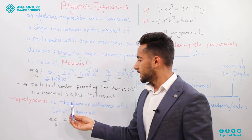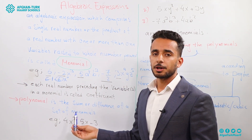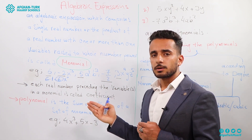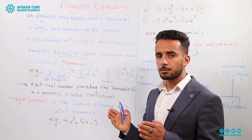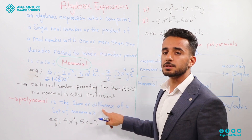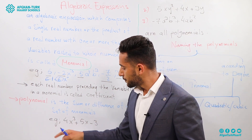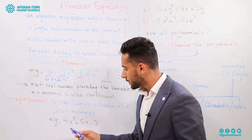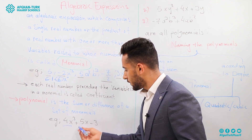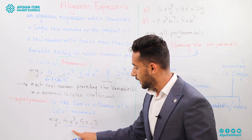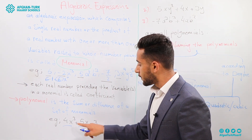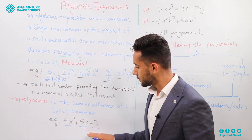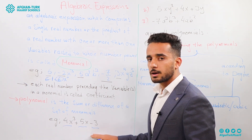A polynomial is the sum or difference of a set of monomials. A polynomial consists of one or more monomials where the operation between the terms is addition or subtraction. For example, 4X to the power of 3 plus 5X minus 3 — we have three monomials: 4X cubed, 5X, and 3. If it has more than one term, then it is called a polynomial.